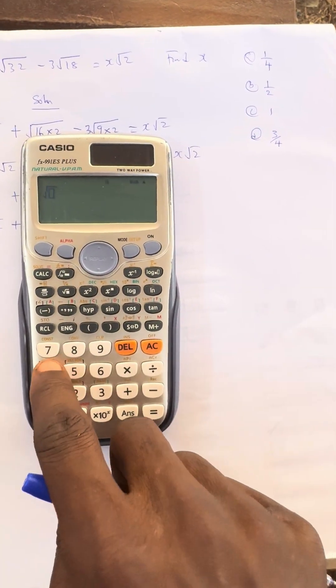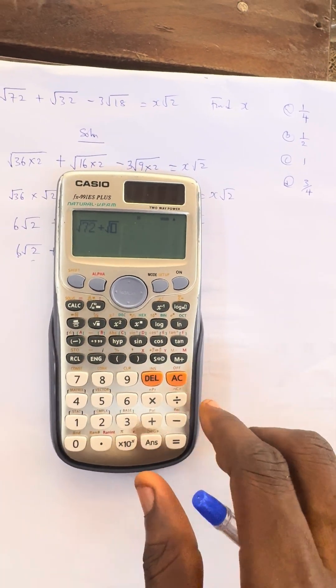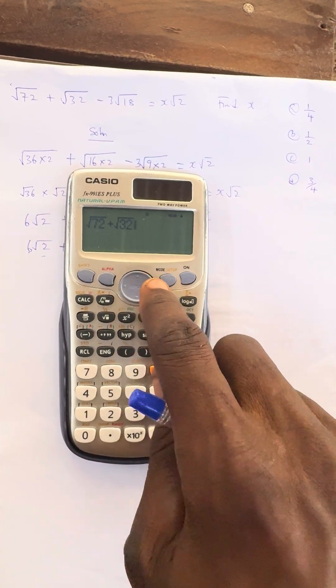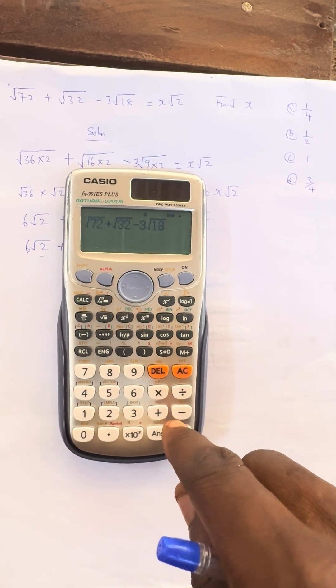I have √72, 4 direction, plus √32, 4 direction, minus 3√18, 4 direction.